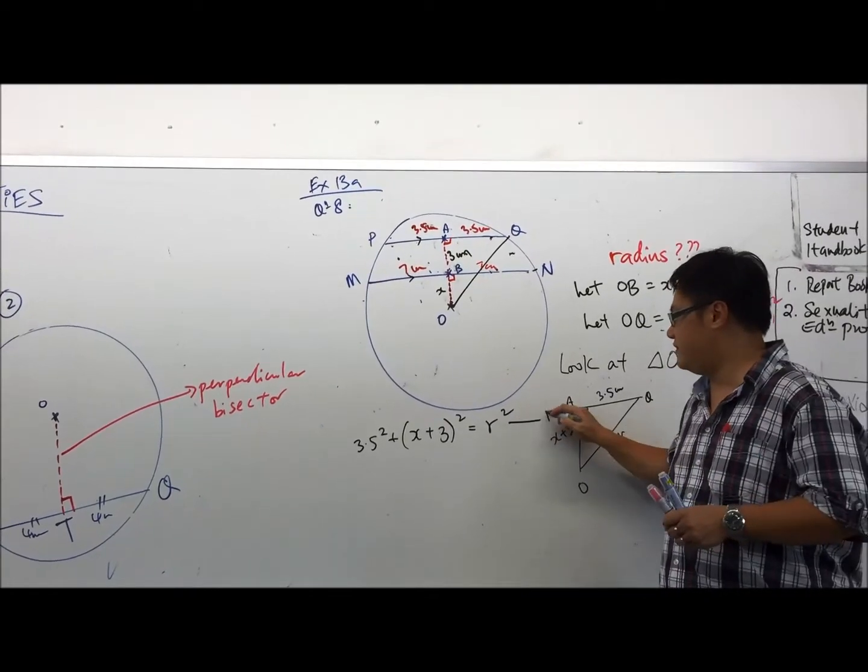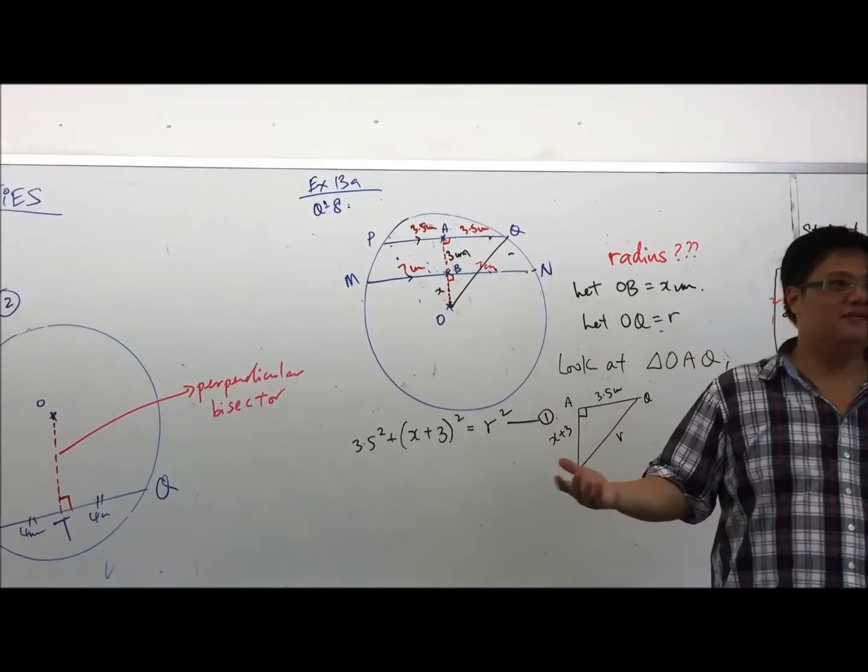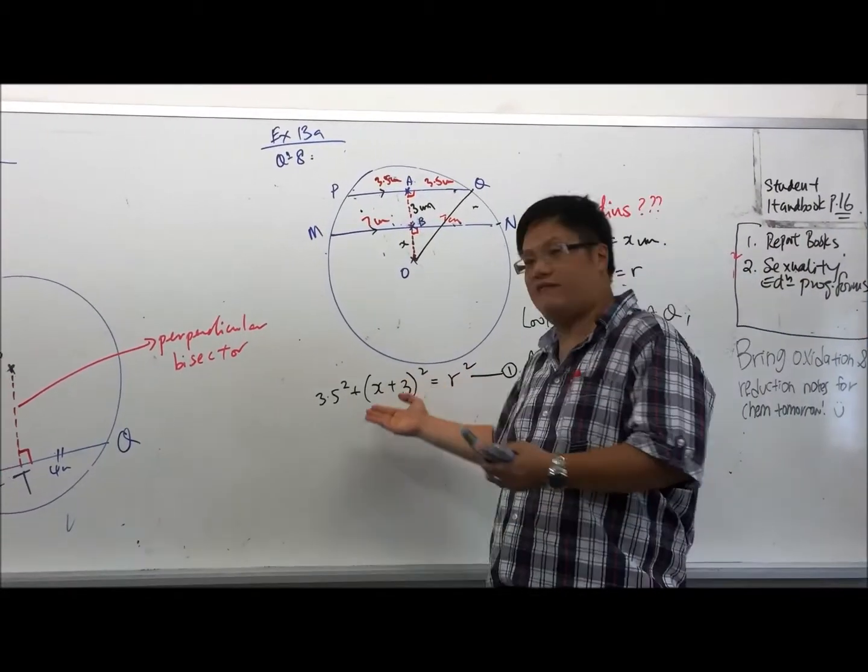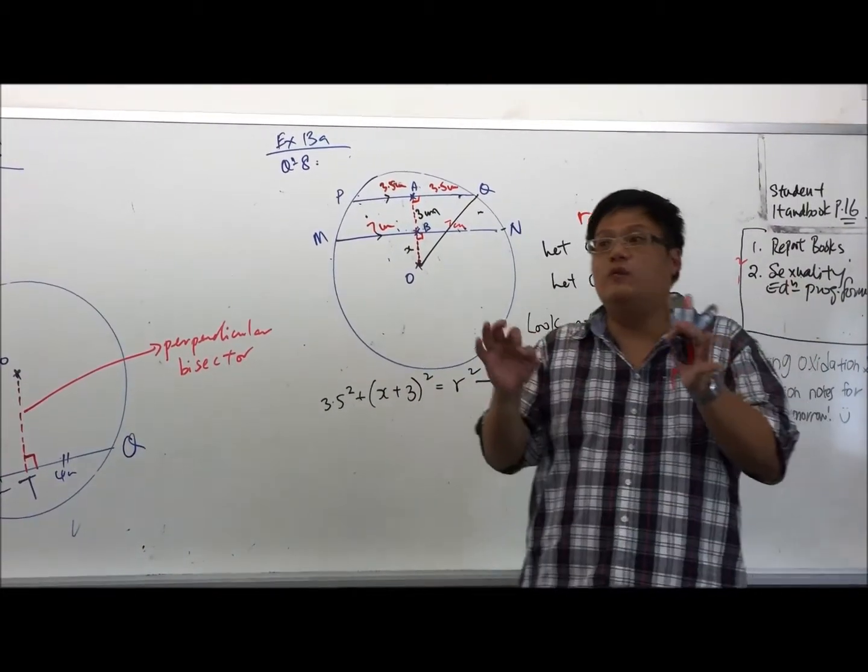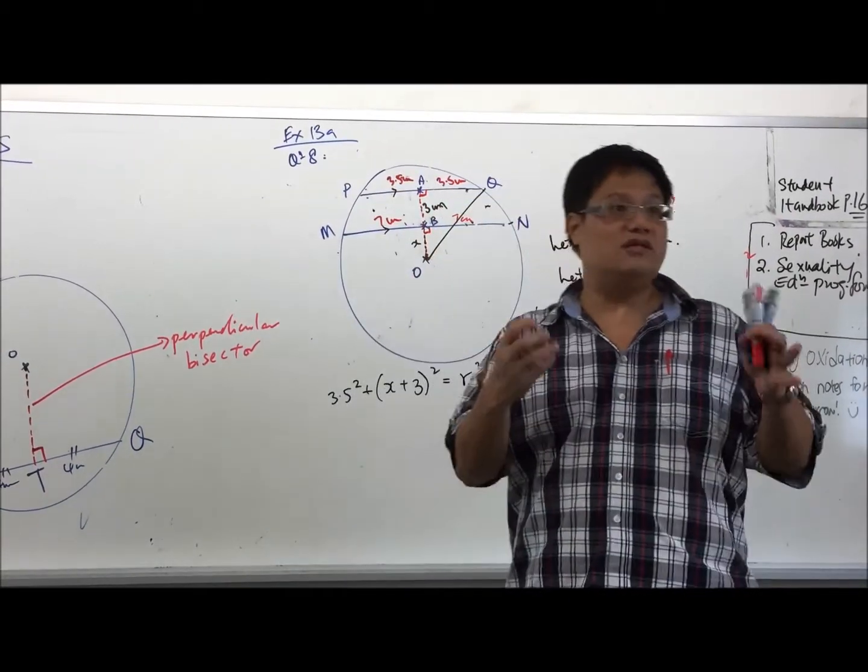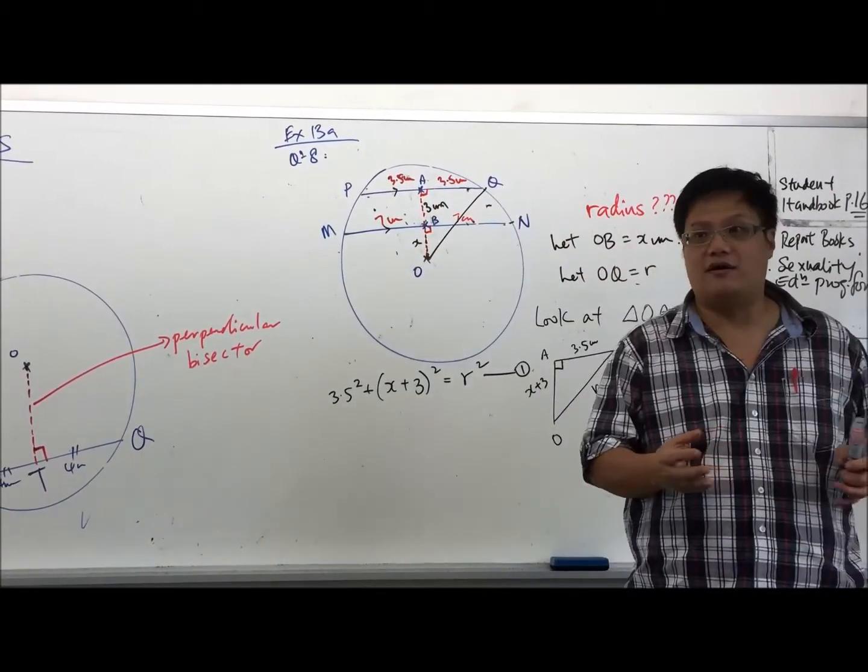So that, my dear, is my first equation. Are we cool? If we have equation one, we have two unknowns. We have x plus r. Naturally, we must look for the second equation. In order to find a unique set of values for r. How do we get the second equation?